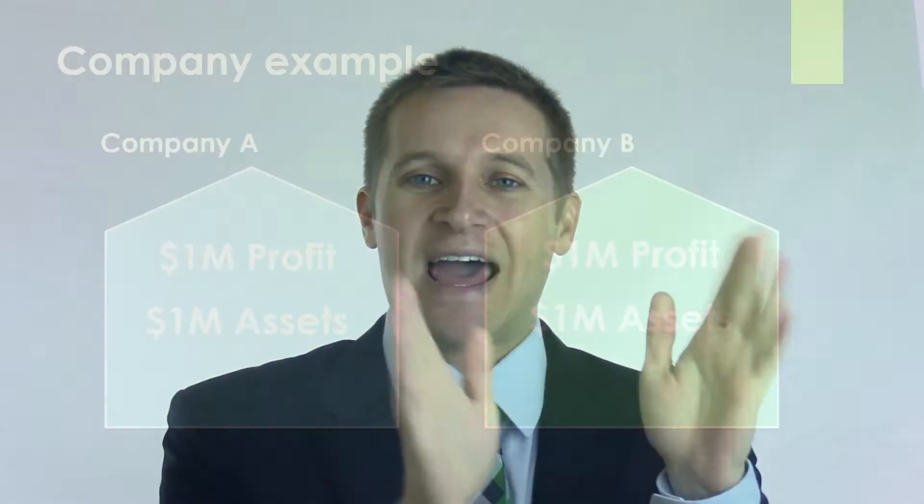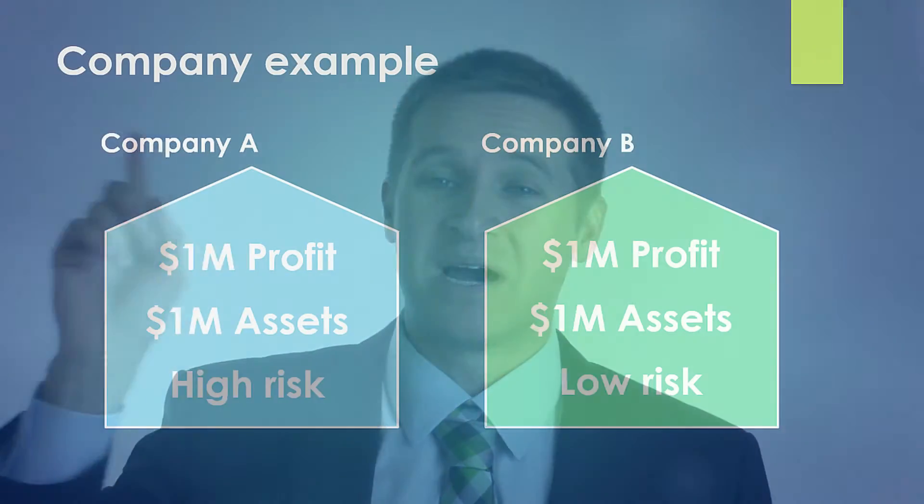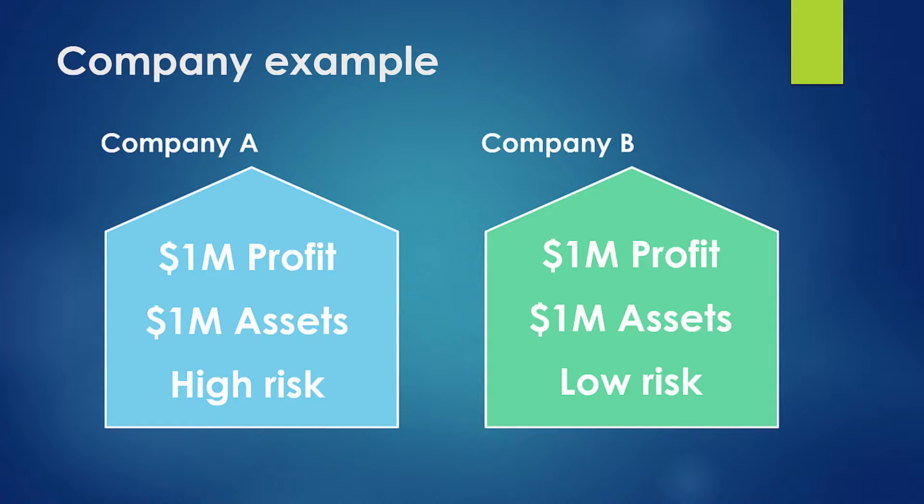Let's say you're that investor sitting at the beginning of the period and you have two different investment opportunities — two companies with the exact same level of assets and the exact same level of expected profit. But these two companies may not be exactly the same if they have different levels of risk. Let's say one company is very high risk and the other is very low risk. That investor is going to look at those two opportunities very differently. They could both have the same profit and the same level of assets, but in one company the investor is taking on a whole lot more risk — a lot more of his capital is at risk.